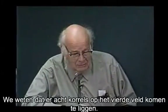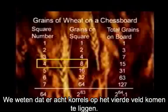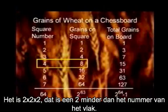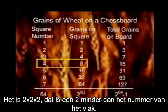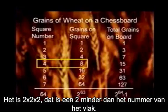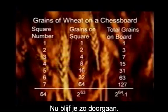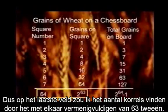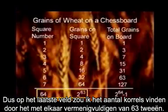Well, let's see what's involved in this. We note there are eight grains on the fourth square. Now I can get this number eight by multiplying three twos together — it's two times two times two. It's one two less than the number of the square. Now that follows in each case. So on the last square, I'd find the number of grains by multiplying 63 twos together.